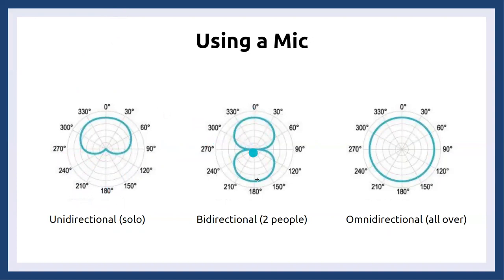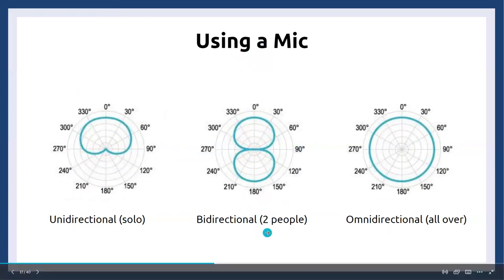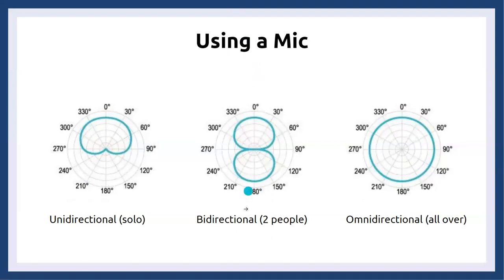A bidirectional mic captures sound from both sides — the front and the back — making it ideal for interviews. We can have one person on each side of the mic and it will pick up sound from each speaker evenly. An omnidirectional mic captures sound evenly all around, which is ideal for large group conversations or for recording sound effects and field noise. Field noise is outdoor sound recorded to add depth to your audio, and the omnidirectional mic creates a nice even capture.